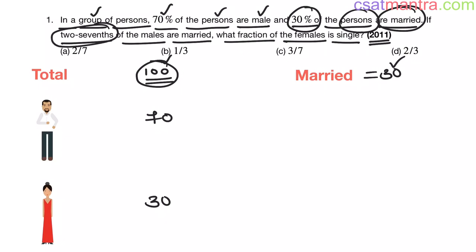Now, two-sevenths of males are married. Two-sevenths of 70, that is seven ones, seven tens. So, there are 20 males who are married.